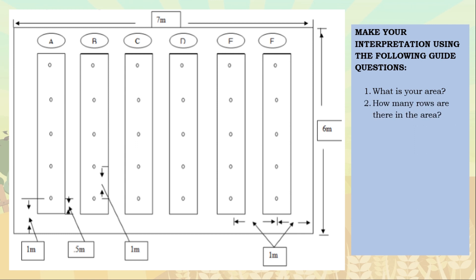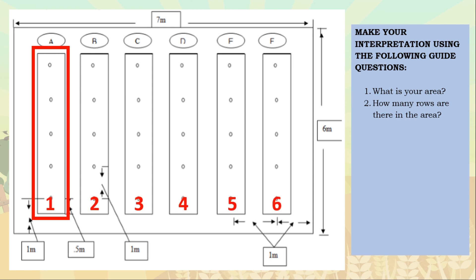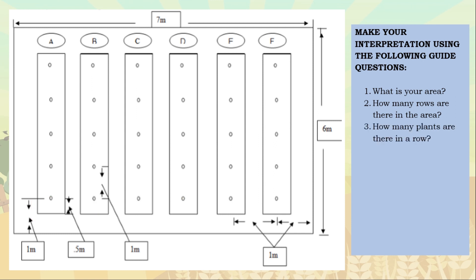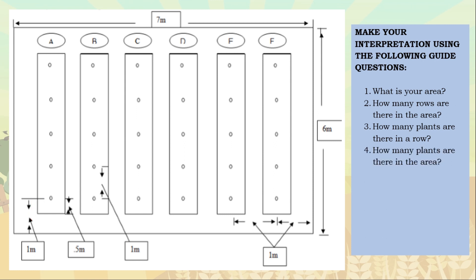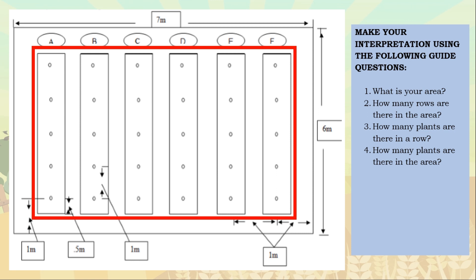Next, how many rows are there in the area? As you can see, each letter defines each row. We have 6 rows in our orchard. Next, how many plants are there in a row? Per row, we have 5 plants. How many plants are there in the area? We will just multiply each row per plant, and we get 30 plants in the area.